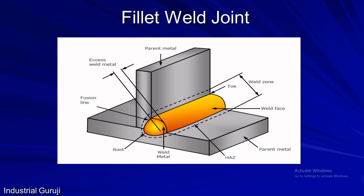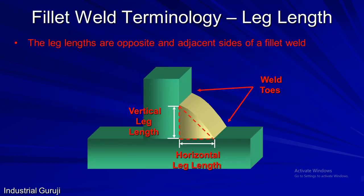Unlike butt welds, fillet welds can be defined using several dimensions. So let's see them one by one. The first dimension is leg length. Leg length is defined as the opposite and adjacent faces of a fillet weld. The vertical distance from root to toe is called vertical leg length, and the horizontal distance from root to toe is called horizontal leg length. Leg length is a very important dimension as, according to AWS, it is referred to as fillet size. So the dimension on a drawing given as fillet size is nothing but the leg length.